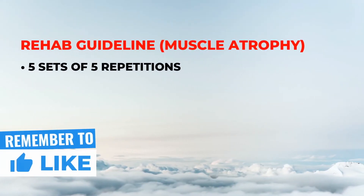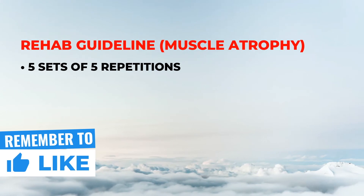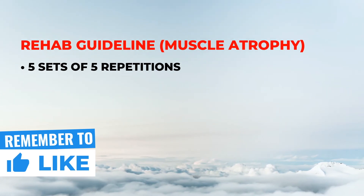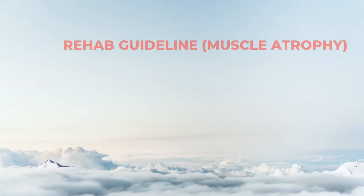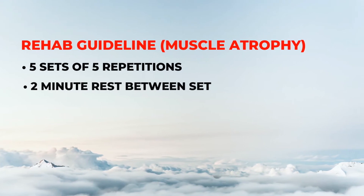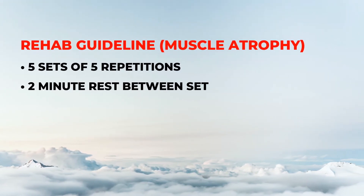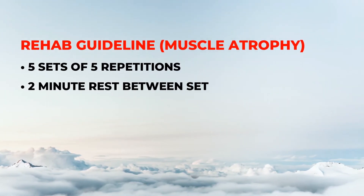If muscle atrophy is a problem, the general guideline for rehab is to aim for five sets of five repetitions with two-minute rest in between each set, to allow adequate time for the muscle to rest and recover.